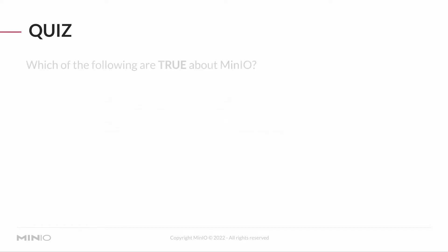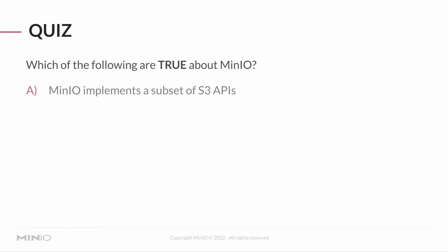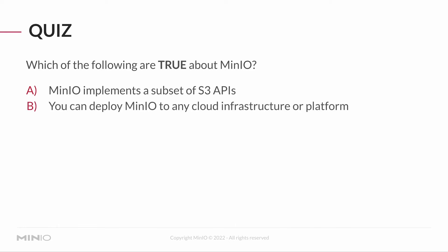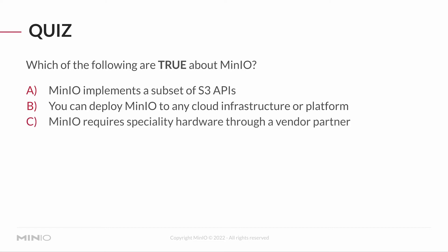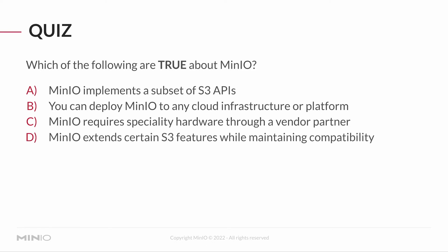Our second question is: which of the following are true about MinIO? A) MinIO implements a subset of S3 APIs. B) You can deploy MinIO to any cloud infrastructure or platform. C) MinIO requires specialty hardware through a vendor partner.